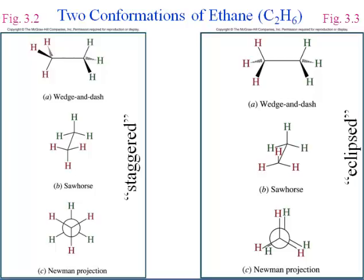We need to be able to quickly sketch out these three-dimensional molecules in a way that doesn't require us to be great artists, but yet we can still communicate those three-dimensional shapes. For ethane, here are three different ways of doing that. On the left side, we've got what's labeled as the staggered conformation, shown using three different models. Over on the right, we've got three different eclipsed conformations — all of those are different ways of drawing the same arrangement.